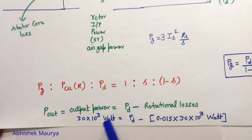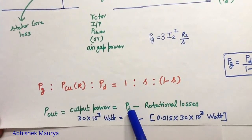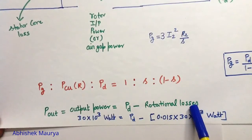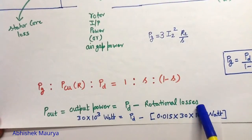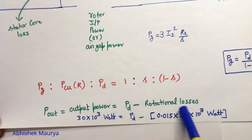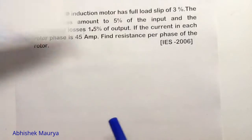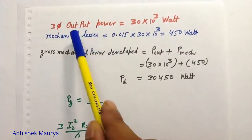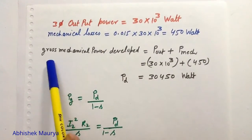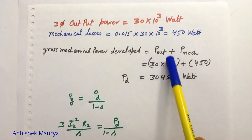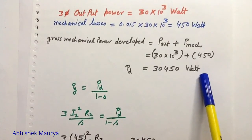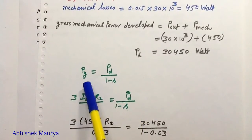You know the relationship between the output power, gross mechanical power developed, and the rotational losses: output power equals Pd minus rotational losses. The output power is 30 kilowatt and the rotational losses are 1.5 percent of the output power. From this equation you can find the gross mechanical power developed, which is P_output plus P_mechanical, giving a value of Pd equal to 30,450 watts.